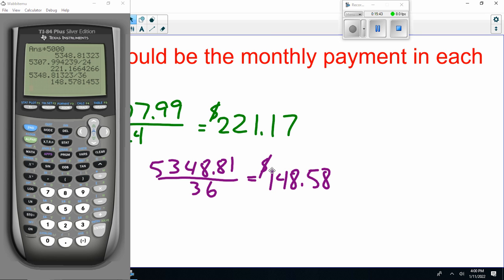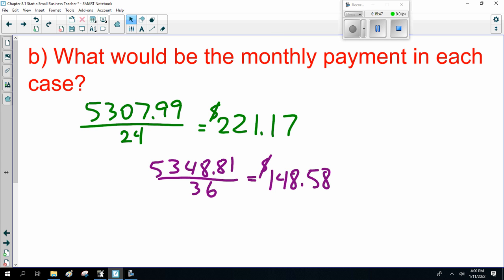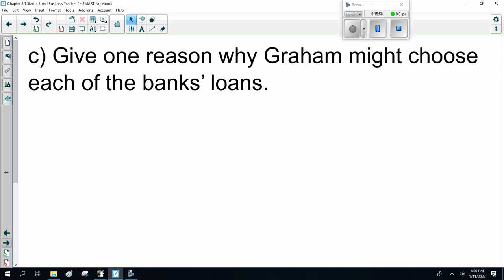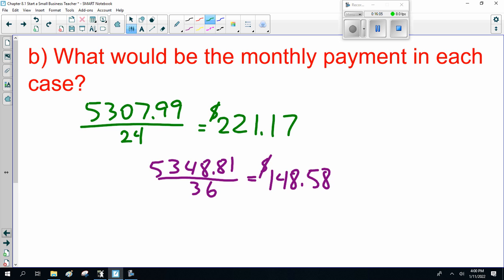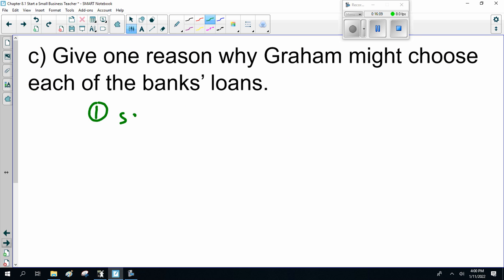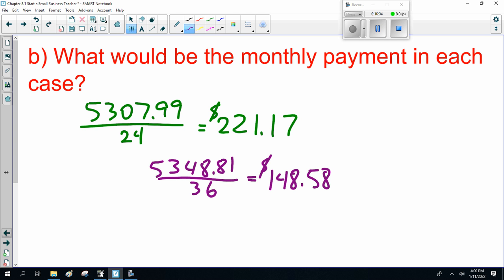So the first loan, where he saves a little, is cheaper overall but costs more per month. The second loan, where he pays back a little more, costs a lot less per month. So the question here is: why would he choose the first bank with the $221 payment? Well, he saves a little money and pays it back faster. Paying off your bills feels good.